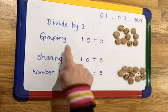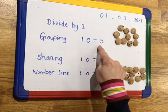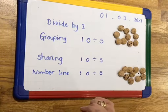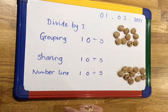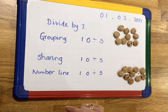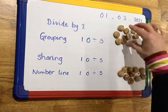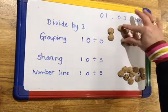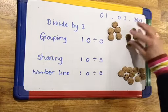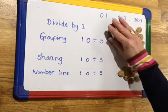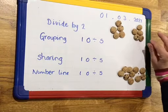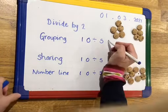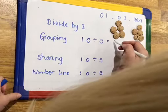We've looked at the grouping method. 10 divided by 5, for example — if I'm grouping, it means how many groups of 5 can I make out of 10 objects, or how many 5s are there in 10. So let's have a look at how many groups of 5 I can make. There's one group, there's another group. So 10 divided by 5 would be 2.